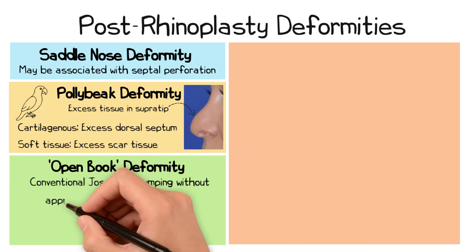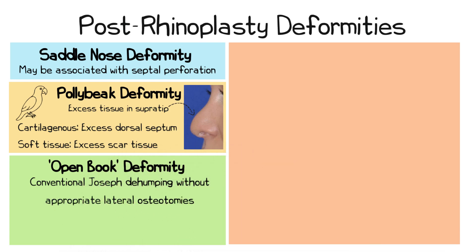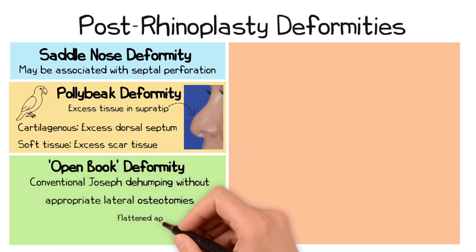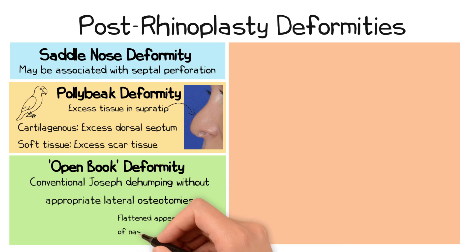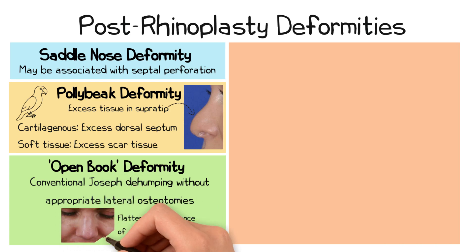An open-book deformity is where conventional Joseph de-humping has been carried out, leaving a flattened appearance of the nasal bones. If lateral osteotomies are not carried out to close the open roof, it can leave a widened and unsightly appearance of the nasal bones.